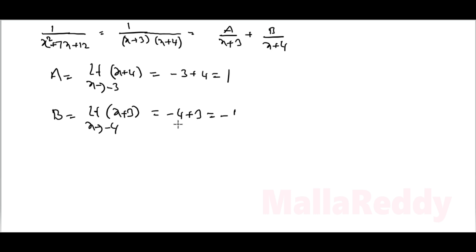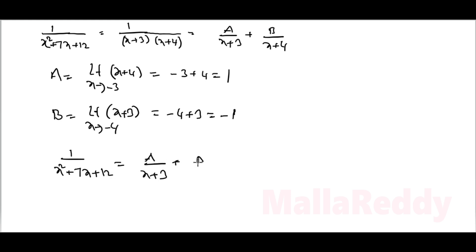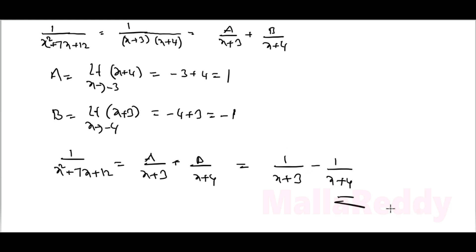A value is 1 and B value is minus 1. So 1 by (x²+7x+12) equals 1 by (x+3) minus 1 by (x+4). These are the partial fractions of the given function.